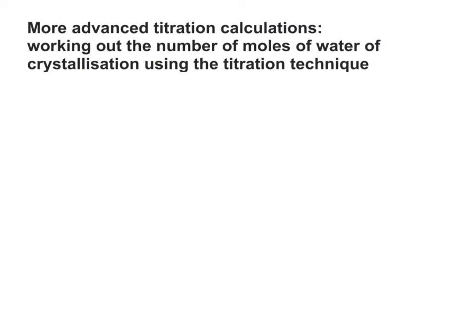Now you're probably familiar with the idea of simply taking a sample of hydrated salt and heating it until it goes to constant mass by driving the water of crystallisation off. You weigh it before, you weigh it after, and this tells you the amount of water in grams that it contains. You can also work out the number of moles of water of crystallisation using titrations.